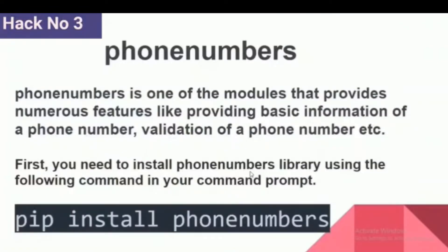If we want to implement this hack from scratch, it will be a very difficult task, so we will use the phone numbers library. With the help of the phone numbers library, it is very easy to implement the above task. Phone numbers is one of the modules that provides numerous features like providing basic information of a phone number, validation of phone numbers, and many other features. In order to use it, first you need to install the phone numbers library using the command: pip install phonenumbers.